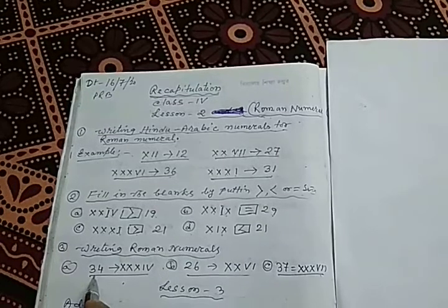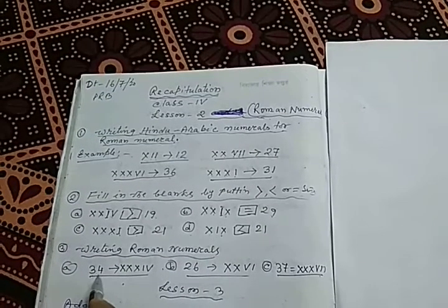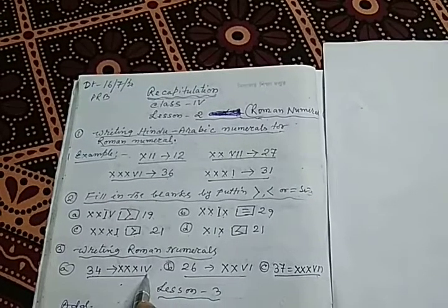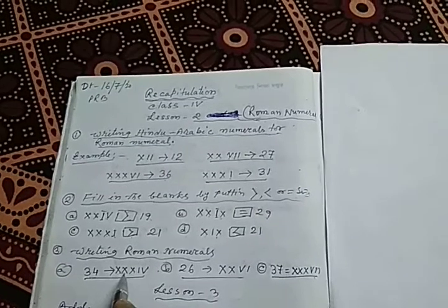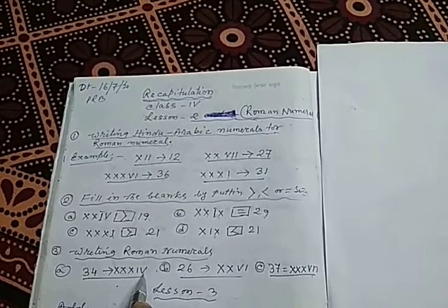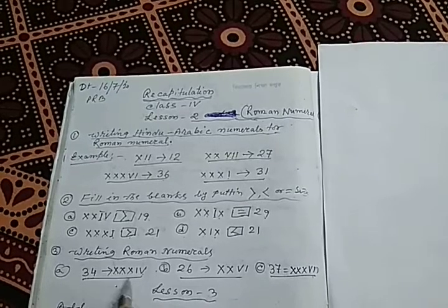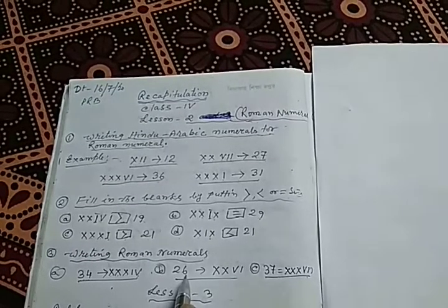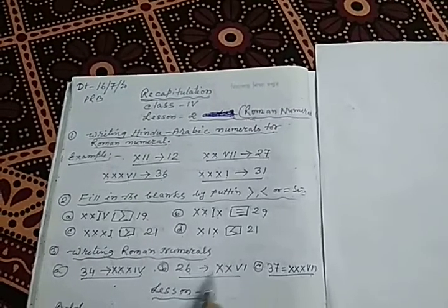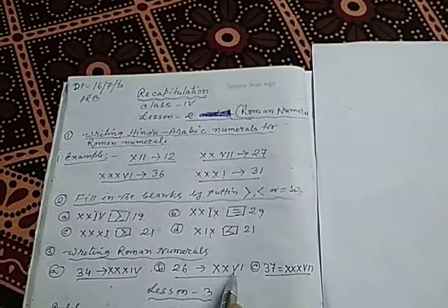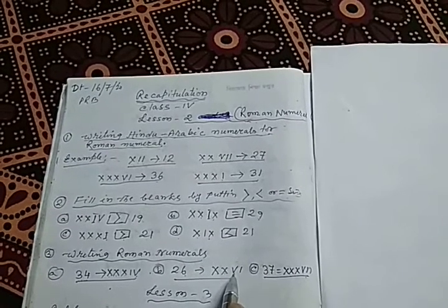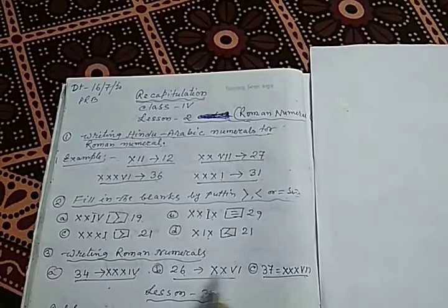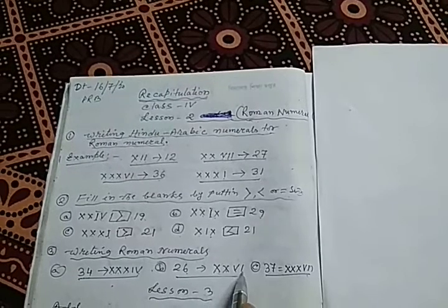In example A, the Hindu-Arabic number given is 34. You have to write it in Roman numerals: 10 plus 10 plus 10 equals 30, plus 4 equals 34. In example B, 26 is given in Hindu-Arabic. Against this number we write 10 plus 10 plus 5 equals 25, plus 1 equals 26. The Roman numeral will be written with two X's, a V, and an I.